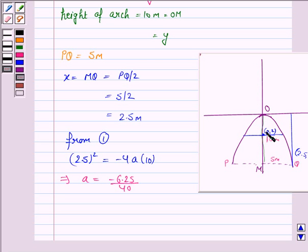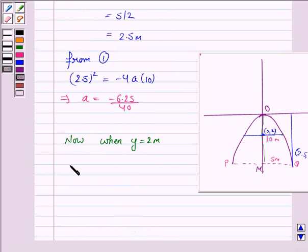Now, we find the x-coordinate when y is 2 meter. When y = 2, x² = -4a(2) where a = -6.25/40. This implies x² = 1.25, so x = 1.119 approximately.